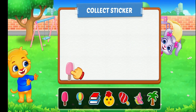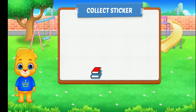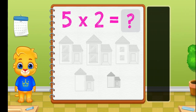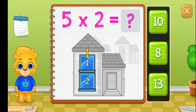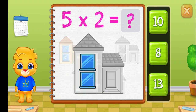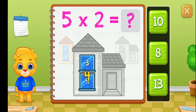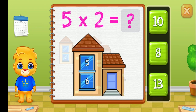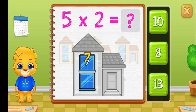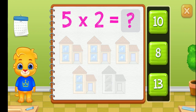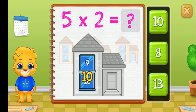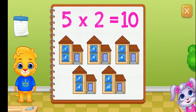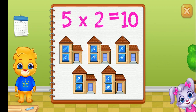Pick a sticker! One, two, three, four, five, six, seven, eight, nine, ten. Five groups of two equals ten.